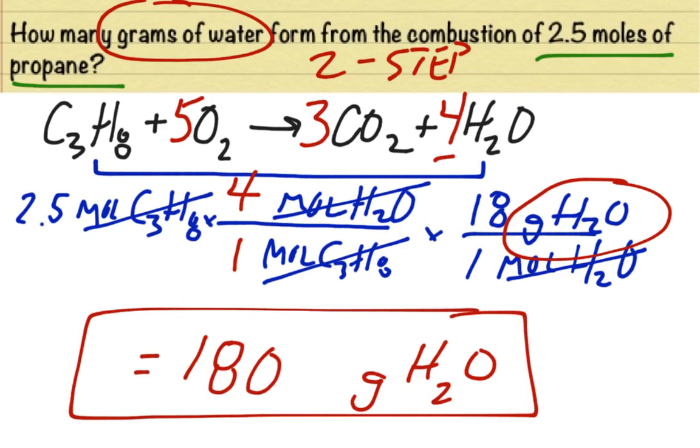What this means is that when you burn 2.5 moles of propane in sufficient oxygen, 180 grams of water vapor will be formed in the process. This is an example of a mole to mass conversion. This is an example of stoichiometry.